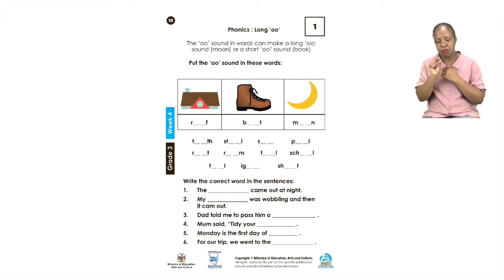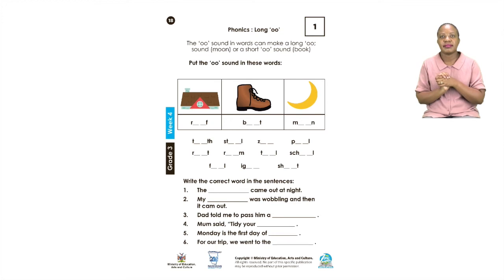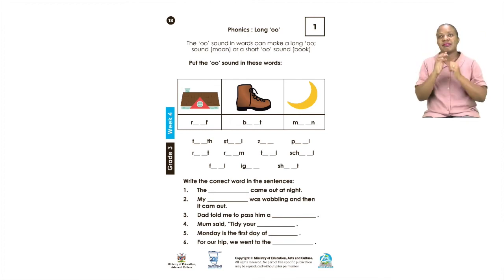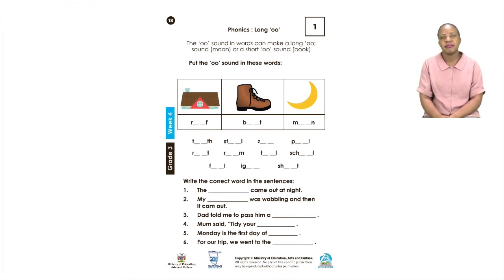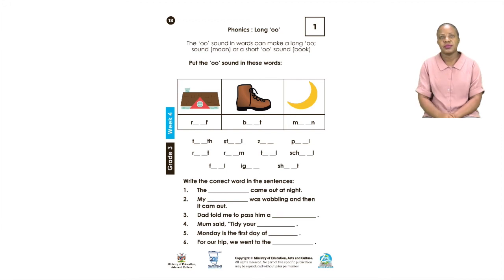For example, we are going to first fill in the ones that have pictures. The first one we already discussed on the board — it is ROOF, R-OO-F. So let us put the sound OO where we can see the roof. The next one — let us put the OO sound to complete the word. The next one: M-OO-N — MOON. So let us put the OO sound where it belongs.